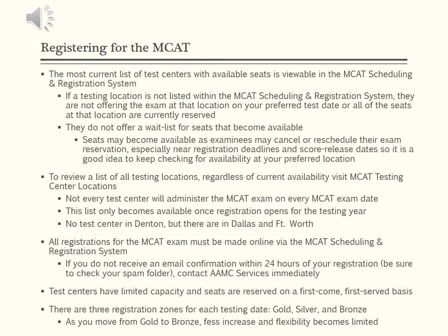If you have a disability or medical condition that requires an adjustment to standard testing conditions, you are encouraged to apply for testing accommodations. A decision on most requests will be made within 60 days of receipt of a complete application. All initial applicants must submit electronically via the MCAT accommodations online system. You should submit your application far enough in advance to allow time to review your request and confirm approved accommodations on your test day. You must be approved no later than the Silver Zone deadline associated with your test date. If you have not received a response by then, you may test under standard conditions or reschedule.